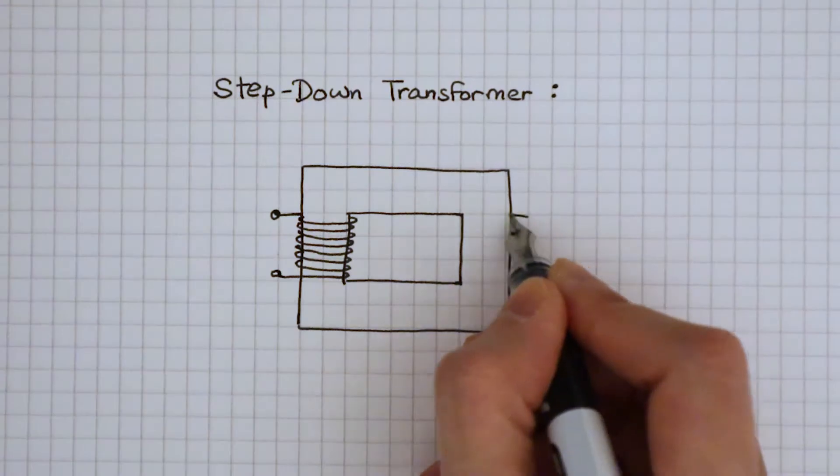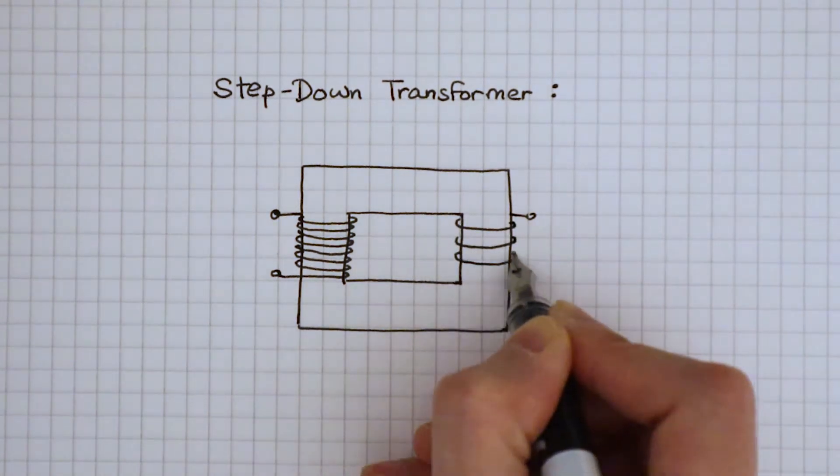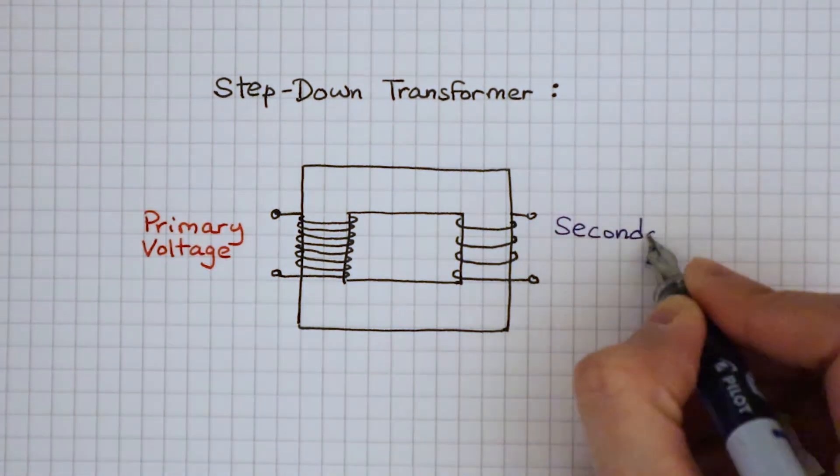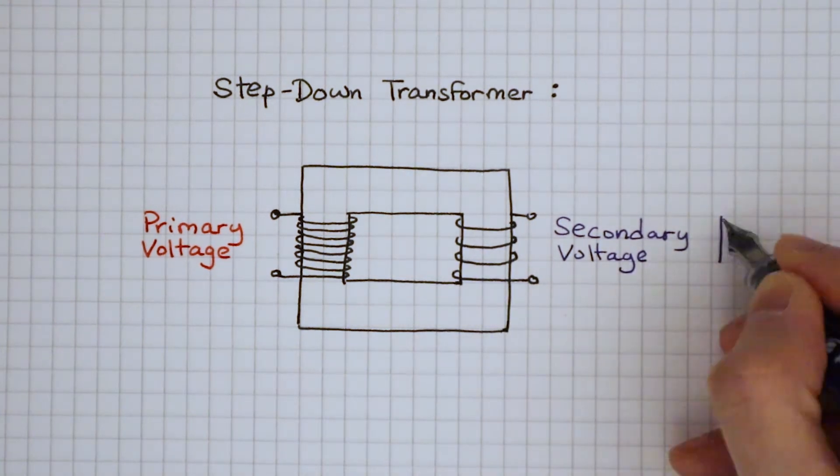In a step-down transformer, there are fewer turns of wire in the secondary coil. This helps to decrease the secondary voltage.